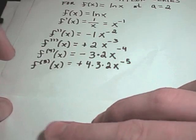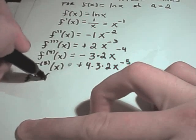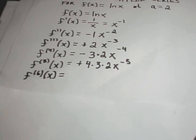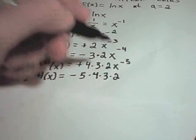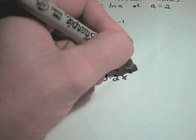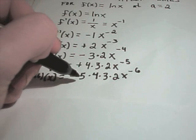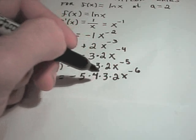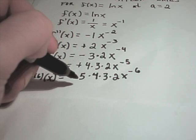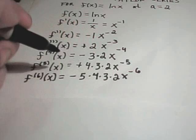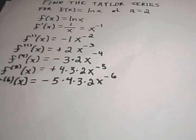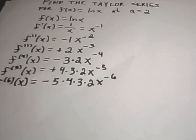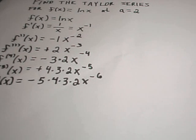Your fifth derivative, that's going to turn out to be a positive 4 times 3 times 2, x to the negative fifth. And maybe let's do one more. So the sixth derivative at x, that's going to turn out to be negative 5 times 4 times 3 times 2 times 1, x to the negative sixth. And the reason why I'm not multiplying these things out, notice you're getting 5 times 4 times 3 times 2. The next one will be 6 times 5 times 4 times 3 times 2.